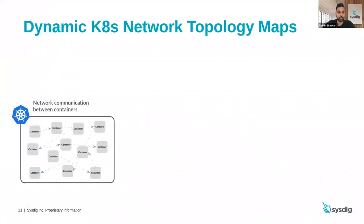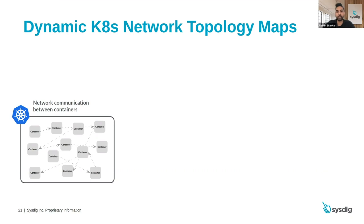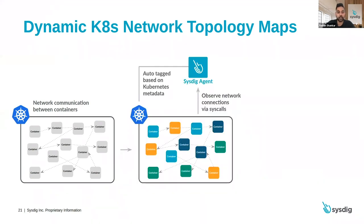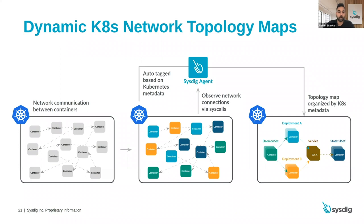Let's first start with a cluster. What you're seeing here is what your current communication might look like — just a bunch of containers talking to another bunch of containers. What Sysdig does that's unique is that we identify the network communication between containers based on syscall events, and then automatically tag the containers based on the metadata that we collect. You don't have to manually group those containers based on image name tags and other criteria — we automatically tag those containers and map that communication flow based on the labels that we adjust.